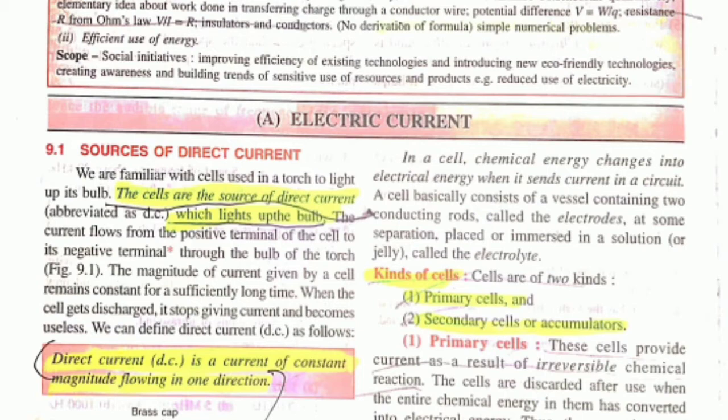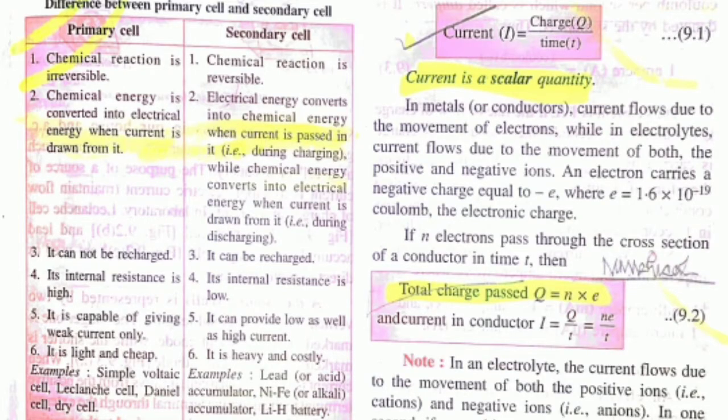There are two kinds of cells: primary cell and secondary or accumulators. Questions related to these two kinds of cells can come, like differentiate between primary cell and secondary cell. So learn this table - chemical reaction in primary cell is irreversible whereas in secondary cell the reaction is reversible.